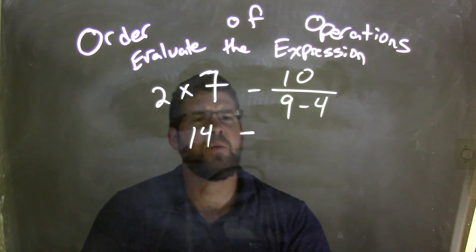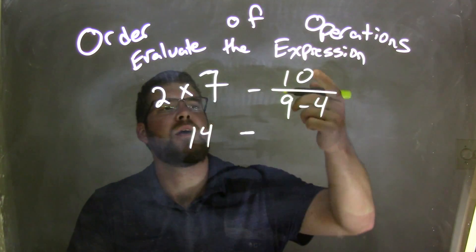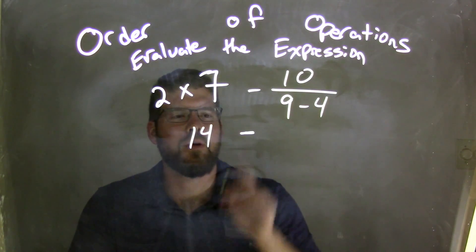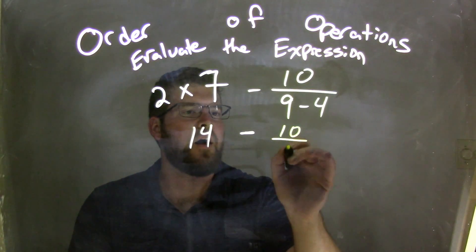Knowing that the subtraction is separating the two parts here. Now, if you're not comfortable with this and you want to take one operation in each step, that's totally fine. 10 over 9 minus 4. Let's deal with that 9 minus 4 first. So 10 up top, 9 minus 4 comes out to be 5.